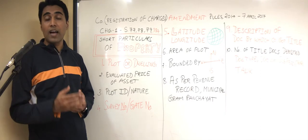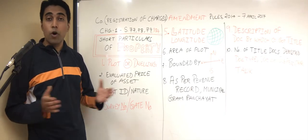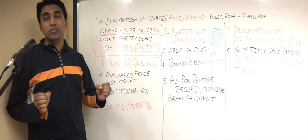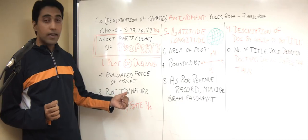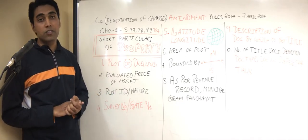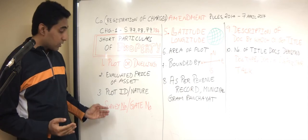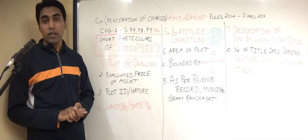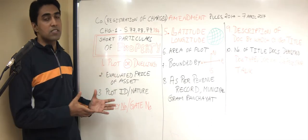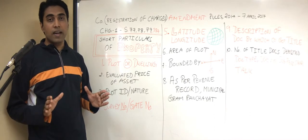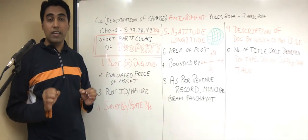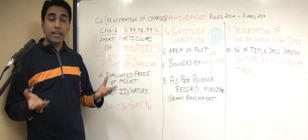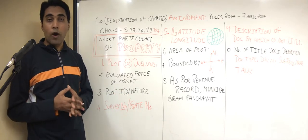Further disclosures are required so that the company cannot escape — they have to give all details. The plot ID and the nature of the property have to be disclosed in CHG-1. Next, they ask for the survey number, or if it is a building, the gate number where the property is located. As you can observe, after each of these disclosures, it is very clear that the government does not want companies showing fictitious assets or fictitious land and buildings to take huge crores of rupees from banks.